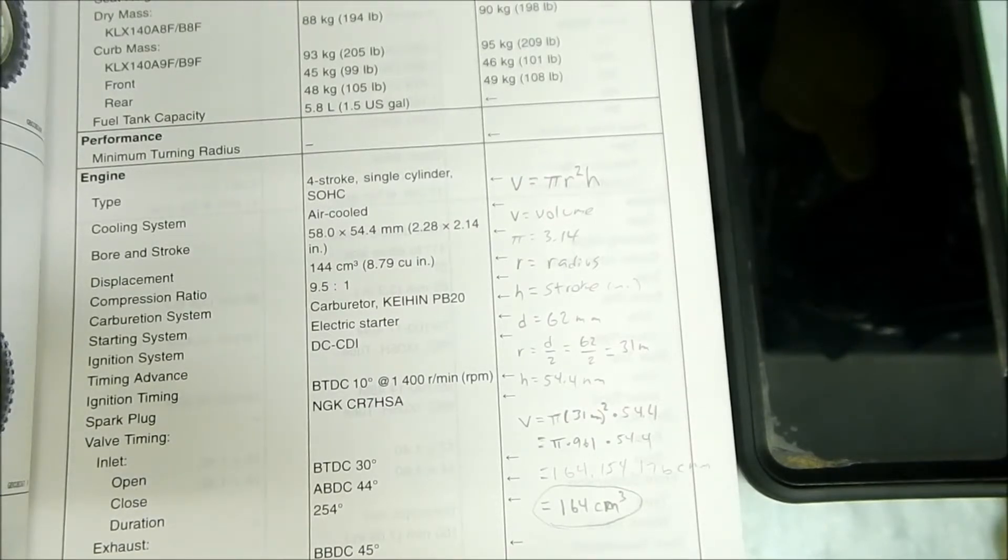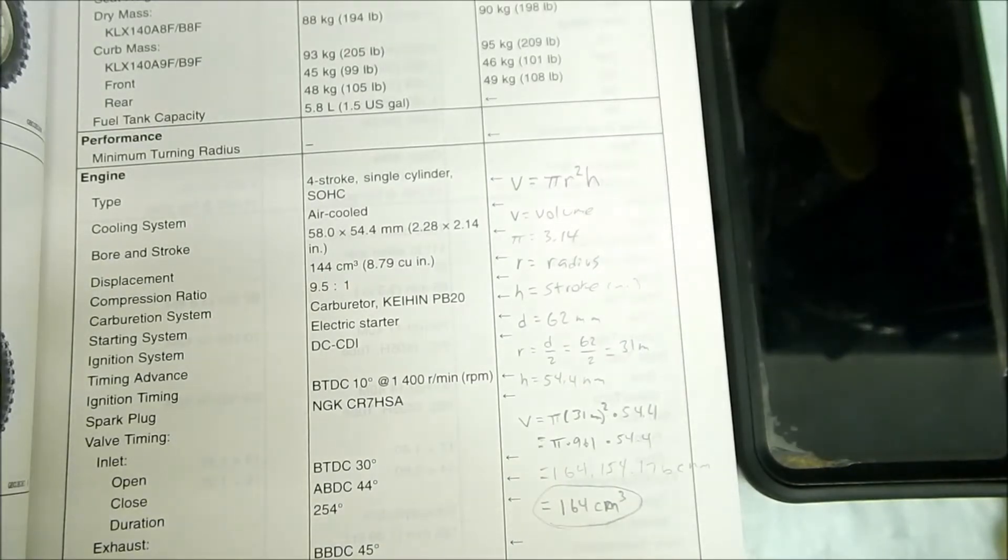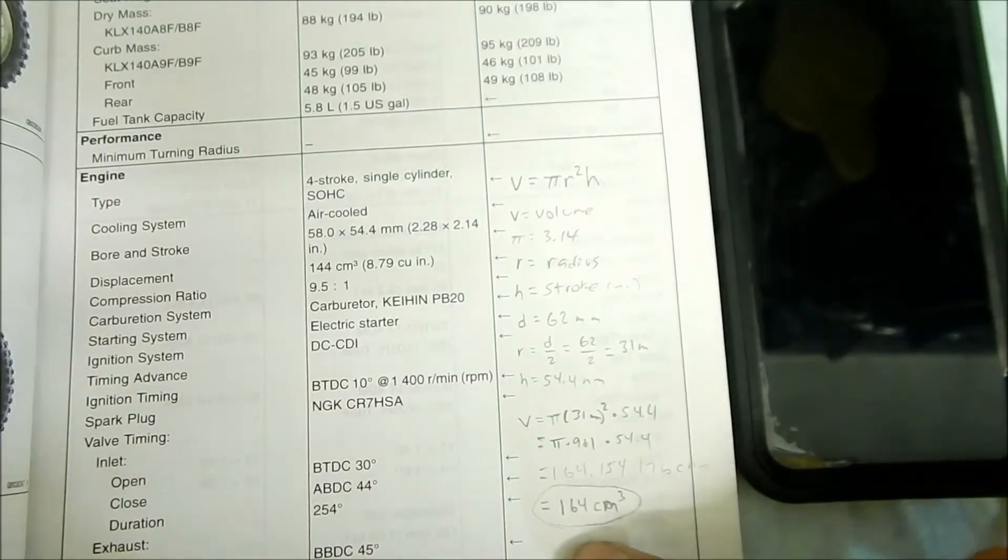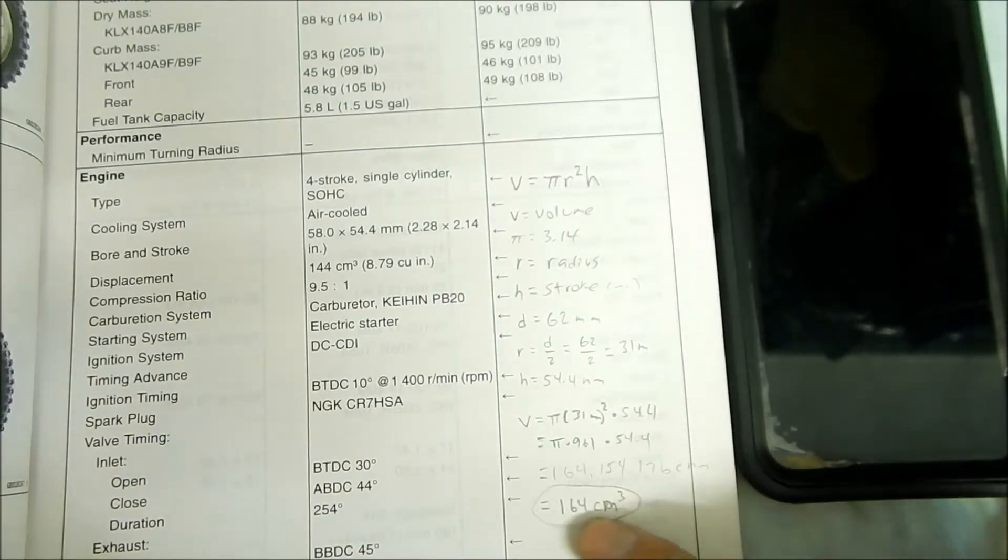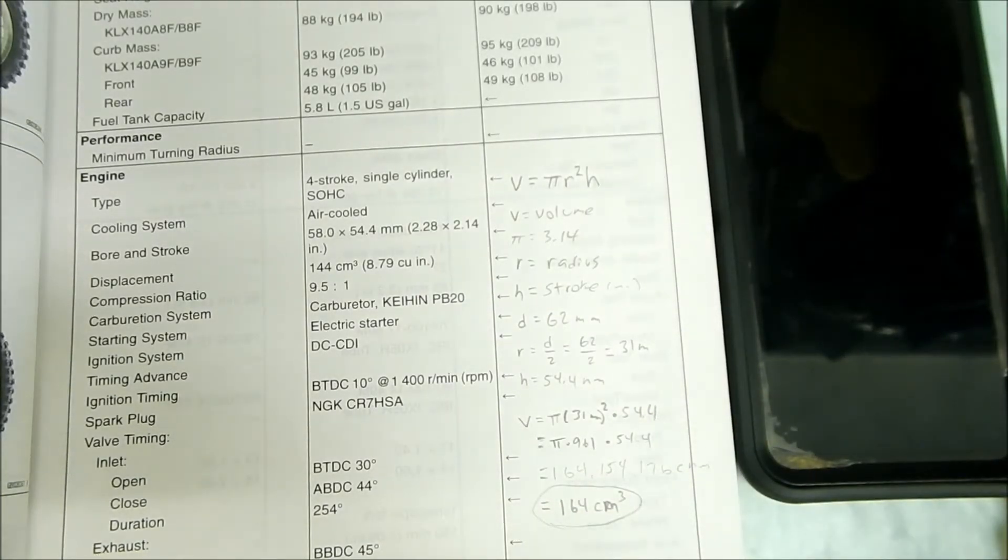In America we rounded down. So technically my KLX 140 would be a KLX 160 after this, or if you want to be really exact it'll be a KLX 164. In fact, I think it should be a little bit bigger because I think the bore would be a little bit bigger than the piston.